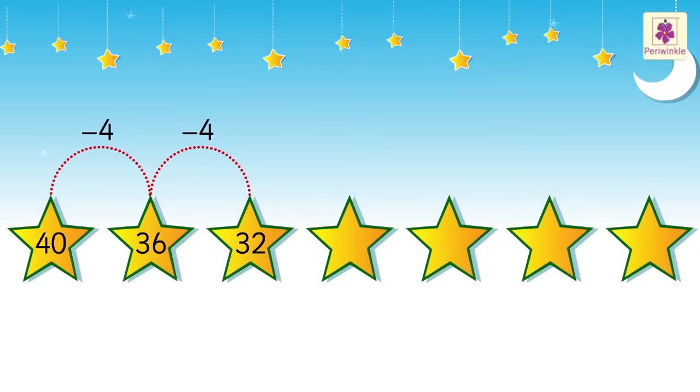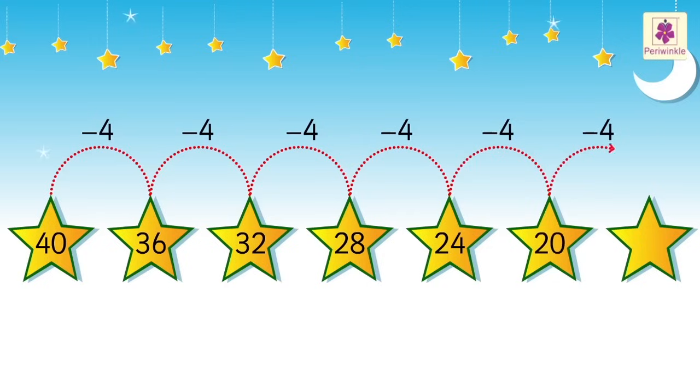We see that in each step, the numbers are reducing by four. Hence, by using this number pattern, we can find the next four numbers. So, we get the four numbers as twenty-eight, twenty-four, twenty, and sixteen. Wasn't it fun learning about patterns?